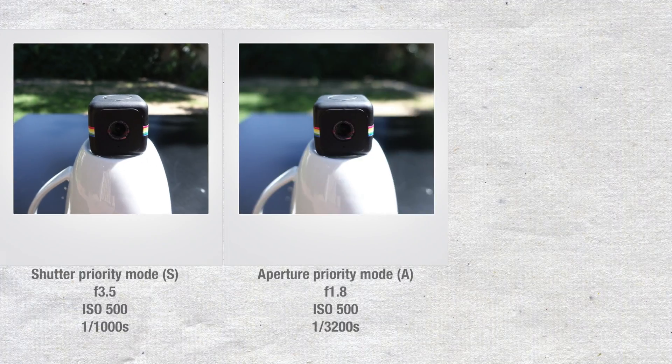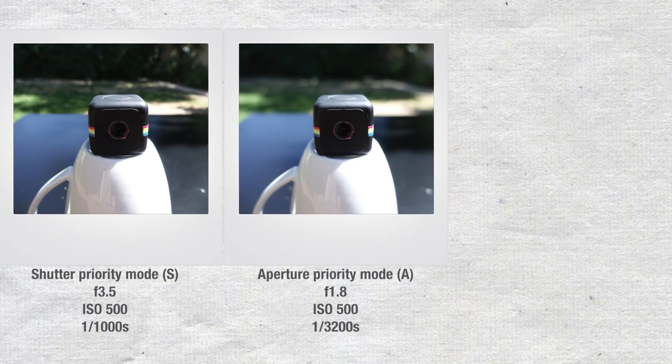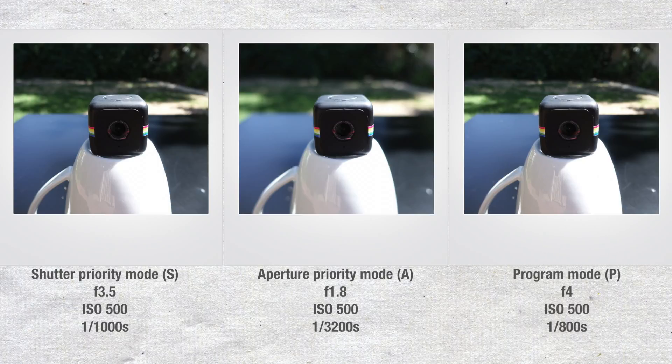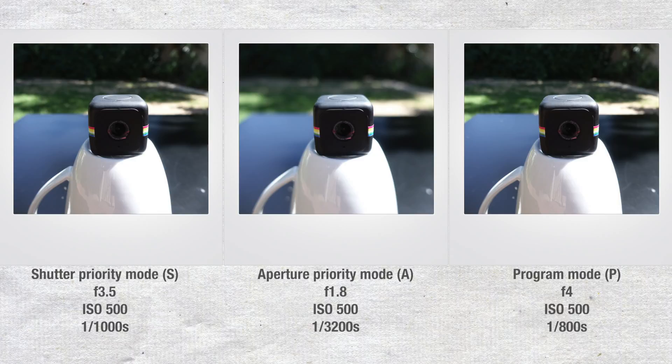However, the background is less blurry. The third picture is shot on aperture priority mode. ISO is still at 500, and aperture is set to f1.8. The camera's computer uses a shutter of 1/13200th of a second to get the right exposure. We now have our blurrier background back because of our wide aperture. Picture number four is shot on program mode. Here, ISO is still at 500. The camera has automatically picked an aperture of f4 and a shutter of 1/800th of a second. We've lost that shallow depth of field due to the smaller aperture.